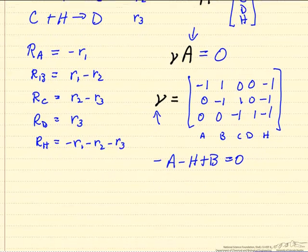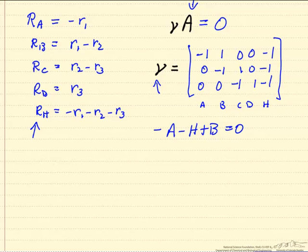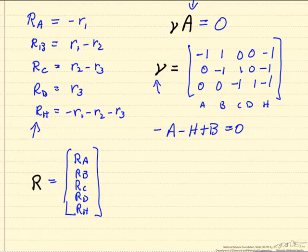If we want to know what these production rates are, we can define a matrix R for the production rates. This is just these 5 rates that I've written in the equations. That's going to be equal to the transpose of nu times a matrix that is the rates R1, R2, and R3.